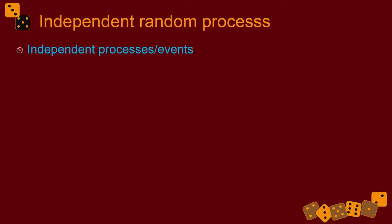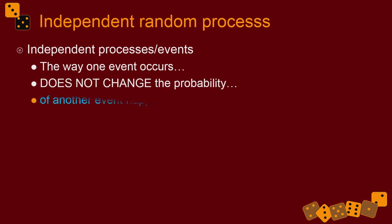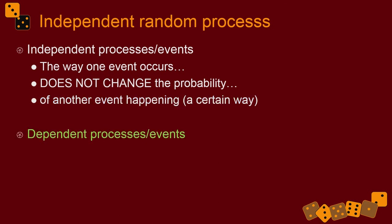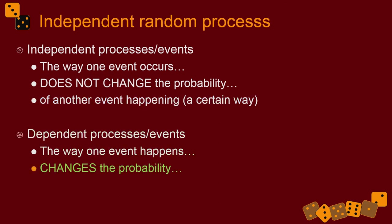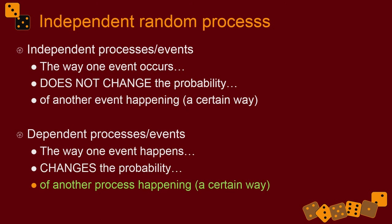Independent random processes or events satisfy this condition: the way one event happens does not change the probability of another event happening a particular way. With dependent processes, the way one event happens does change the probability of the other event or process happening a certain way.